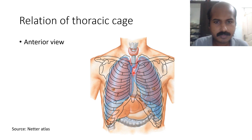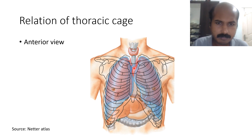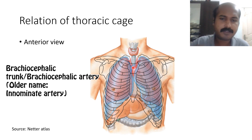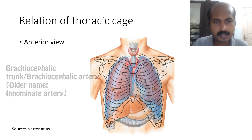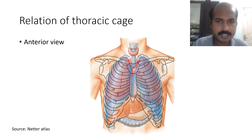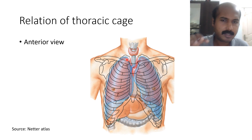The arch of the aorta climbs up to almost the level of the middle of the manubrium sternum. At the middle of the manubrium sternum, it gives off a very important branch: the brachiocephalic. The brachiocephalic is given towards the right side, and as it reaches the sternoclavicular joint it divides into the right subclavian and the right common carotid.